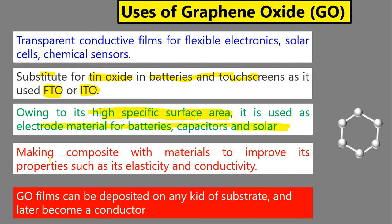Finally, we can use graphene oxide to make composites with materials whose properties are not strong enough. We blend graphene oxide with another material to improve its strength, elasticity, and conductivity. Since graphene has a zero band gap, it is a good conductor. This was all about the uses of graphene oxide, why we need it, the procedures to produce it, and how we convert insulating graphene oxide into reduced graphene oxide.